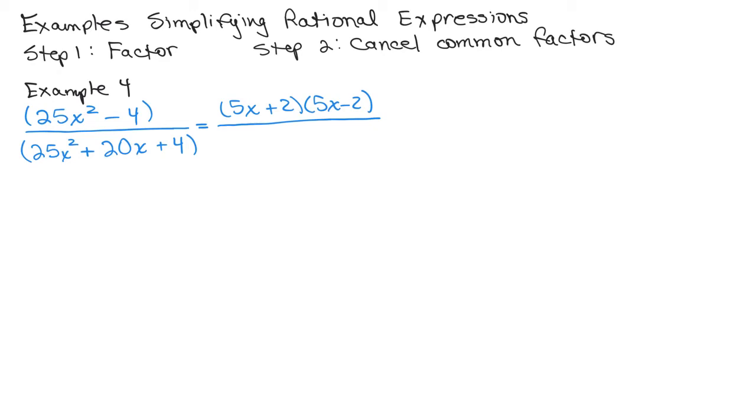And in the denominator, this happens to be a perfect square. It's 5X plus 2 times 5X plus 2. You might recognize that or maybe you find out how to factor using some other method. But in any case, I factor the numerator and factor the denominator. And then if there's a common factor, we cancel.